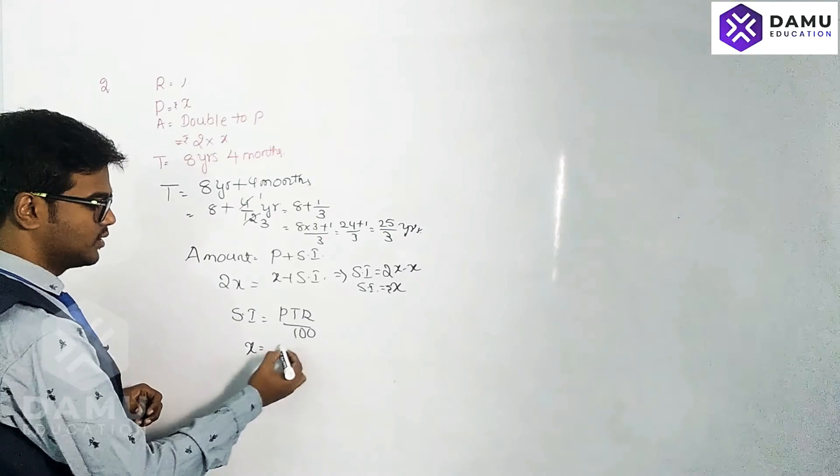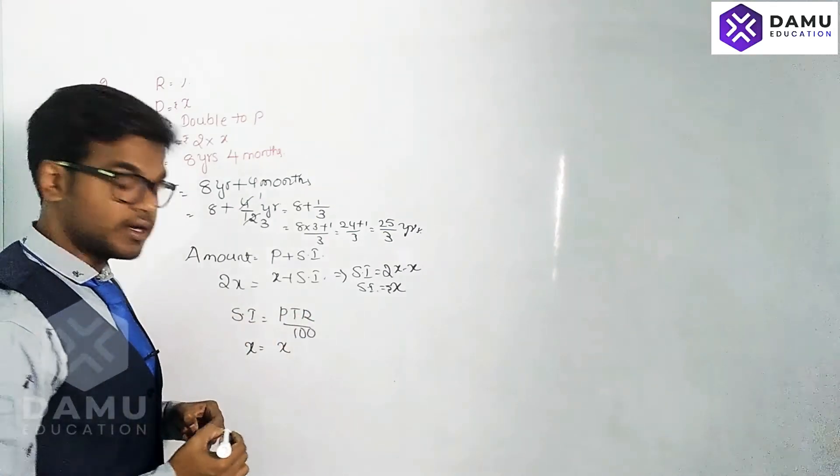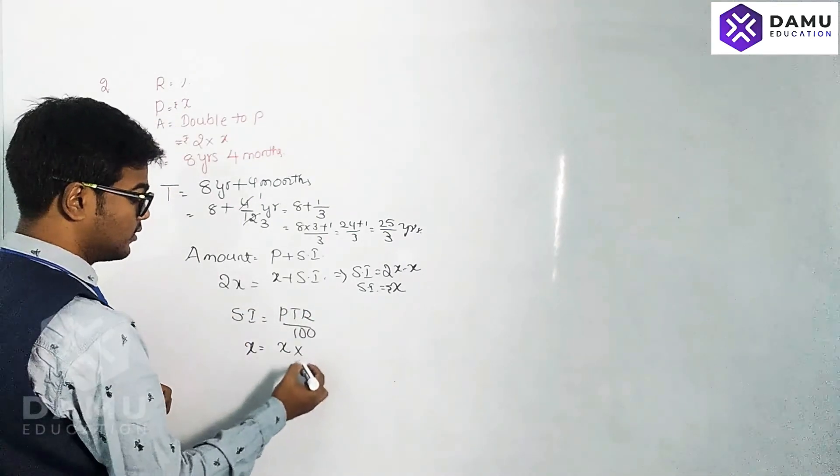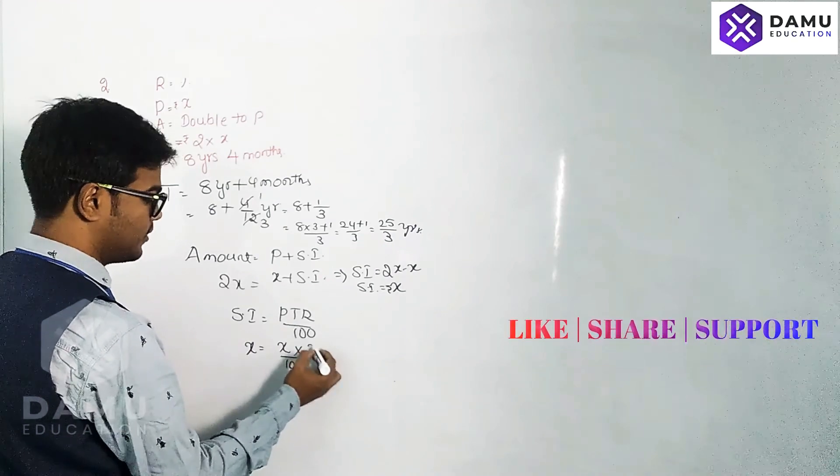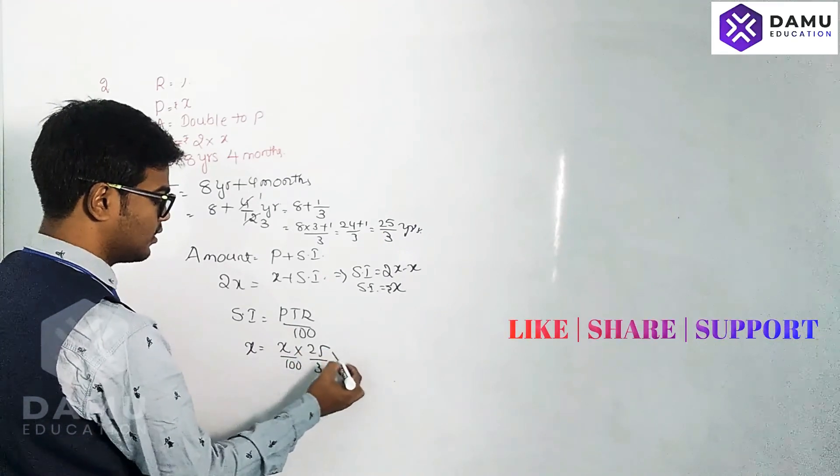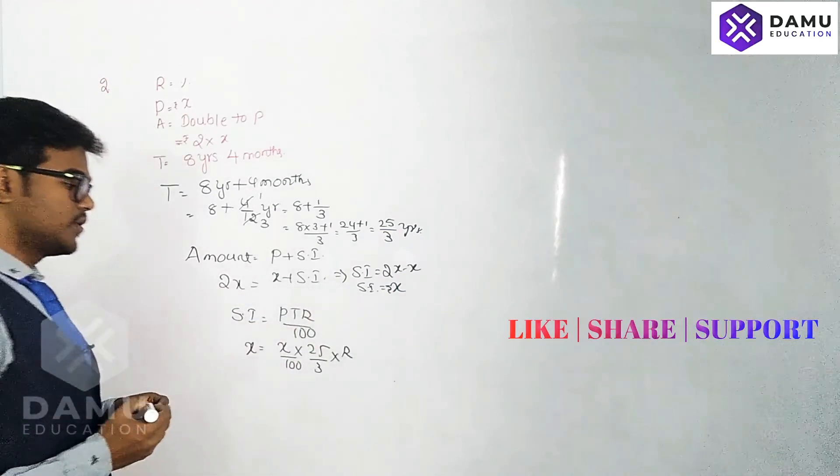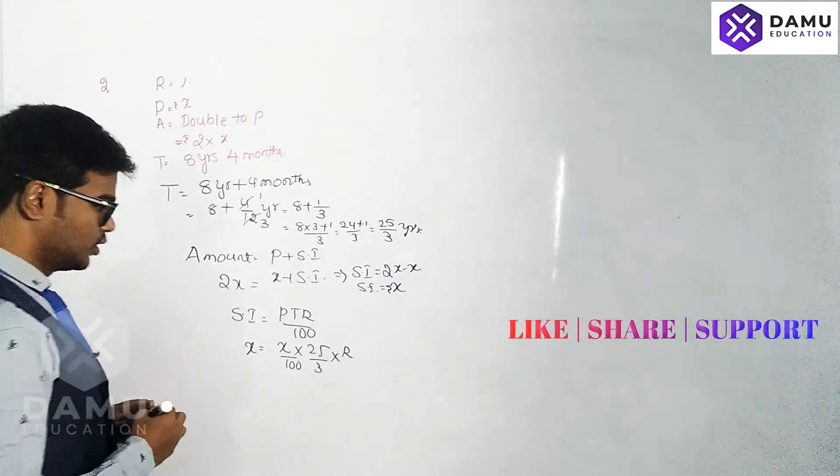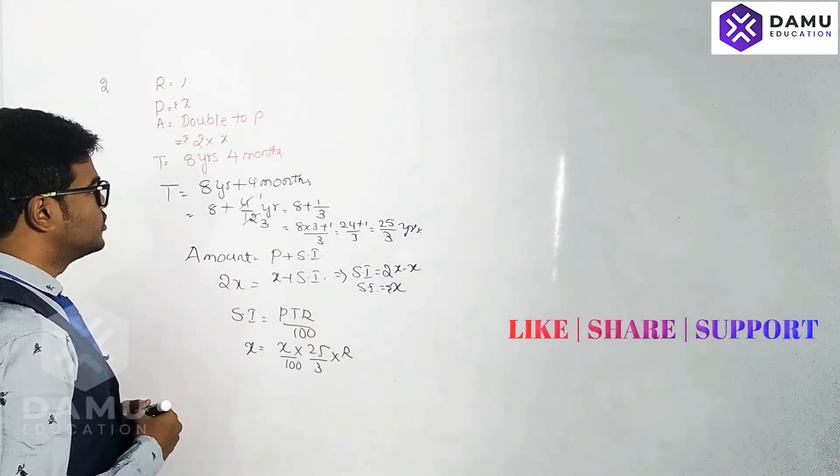Simple Interest we already calculated, that is X rupees. And PTR: P is X, Time will be 25 by 3, into R.